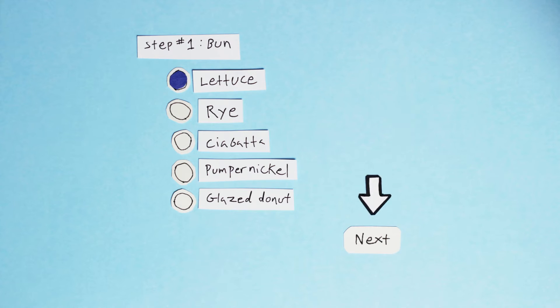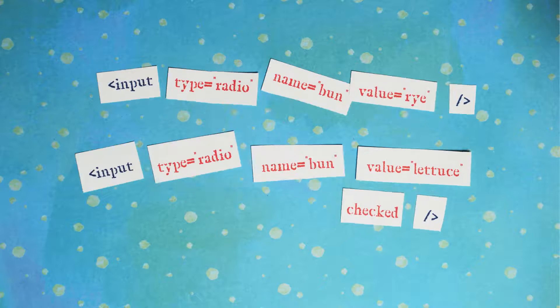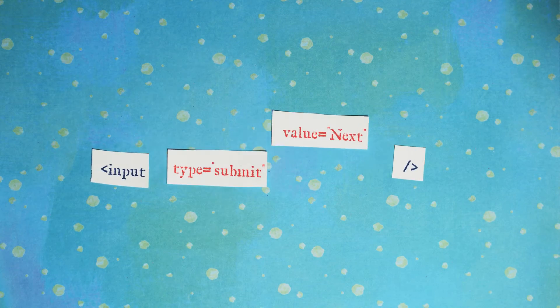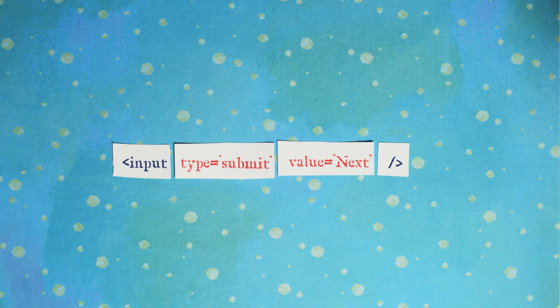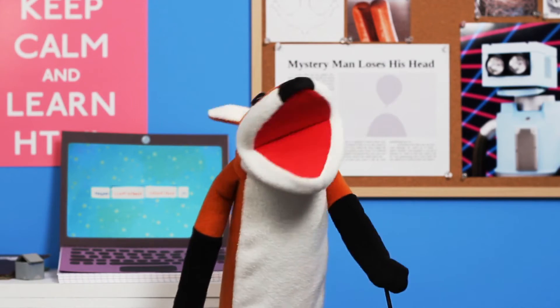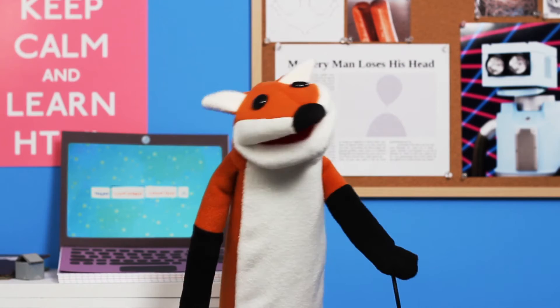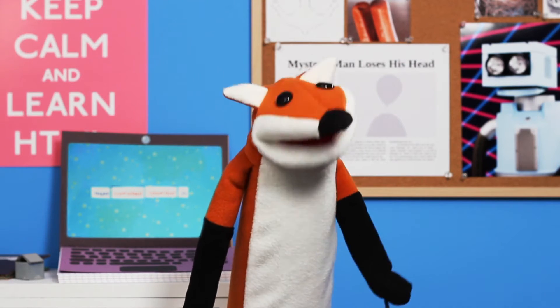This next button is another type of input: the submit type. In addition to the type attribute, it also has a value attribute. The value attribute for submit buttons is the text that shows on the button.